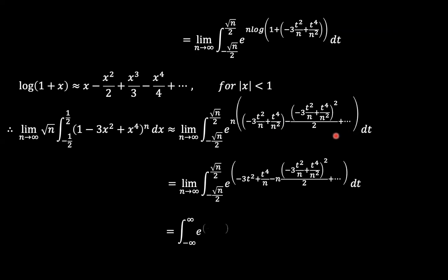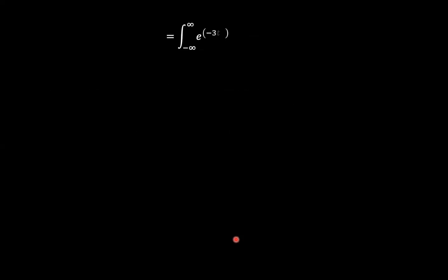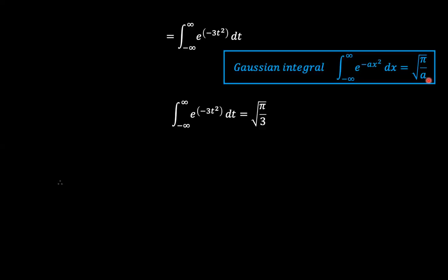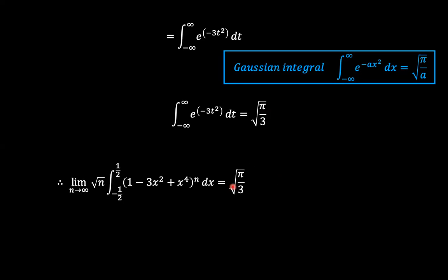As n tends to infinity the upper limit also tends to positive infinity, and we're only left with e to the power negative 3t squared. This is the well-known Gaussian integral: the integral from negative infinity to positive infinity of e to the power minus ax squared equals the square root of pi over a. Since a equals 3, our integral becomes the square root of pi over 3, and that is our answer.